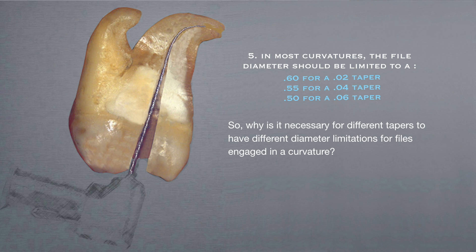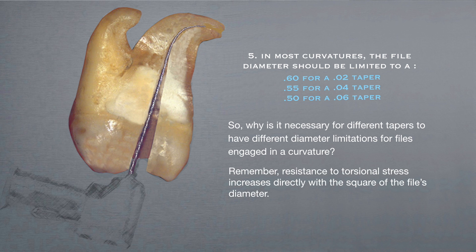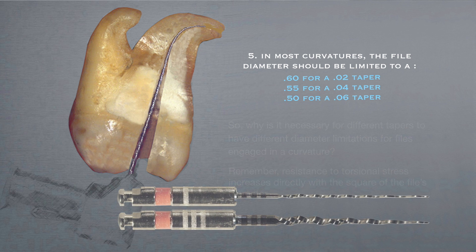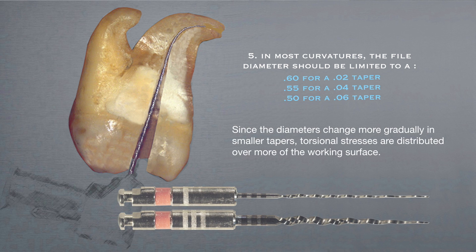So why is it necessary for different tapers to have different diameter limitations for files engaged in curvatures? Remember, resistance to torsional stress increases directly with the square of the file's diameter. Since the diameters change more gradually in smaller tapers, torsional stresses are distributed over more of the working surface.